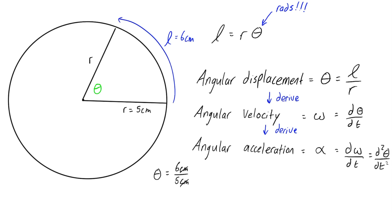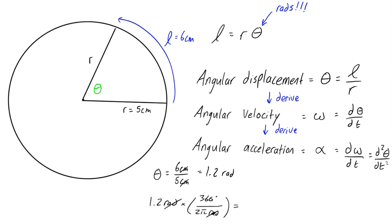That gives us 1.2, and that dimensionless unit for theta is radians. You could also put this in terms of revolutions or degrees. If we wanted to convert 1.2 radians to degrees, we multiply by the conversion factor 360 degrees over 2 pi radians. That cancels the radians, and 1.2 times 360 over 2 pi gives us about 69 degrees.